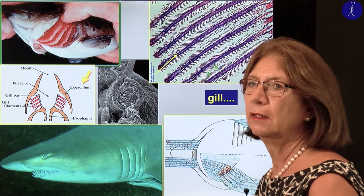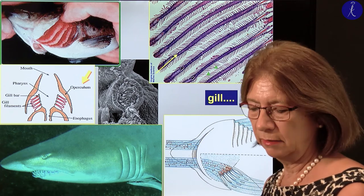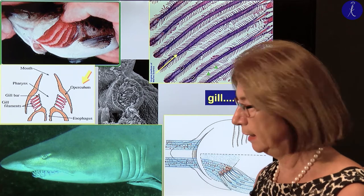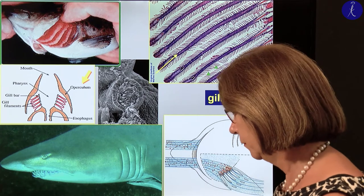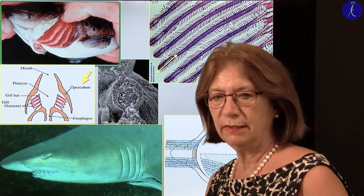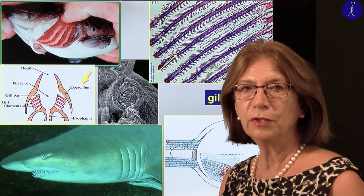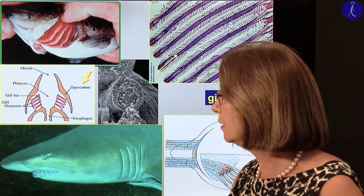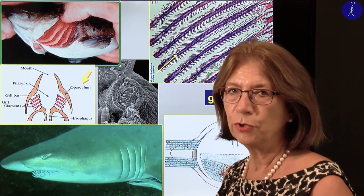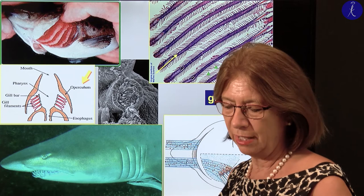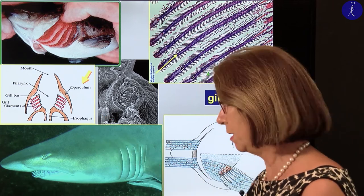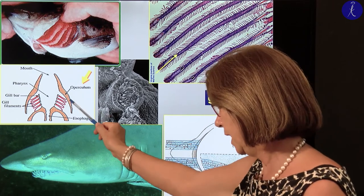Sharks don't have a gill lid, that's why they have to swim all the time to get enough oxygen. You would think this operculum has nothing to do with human embryology, but you will see soon that humans also have at a certain point an operculum — so remember this plate, please.